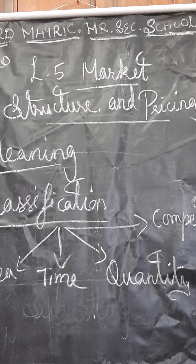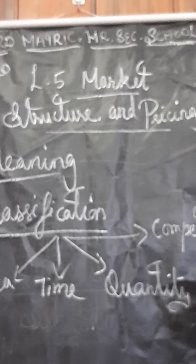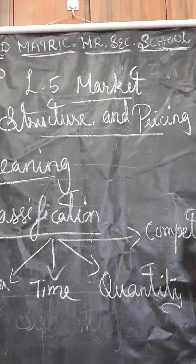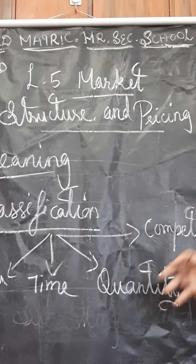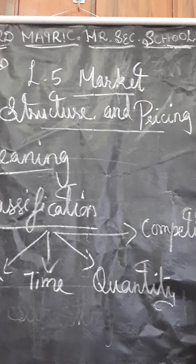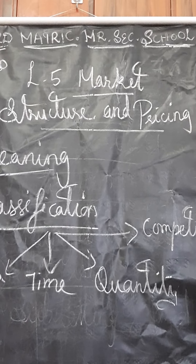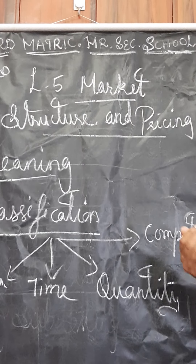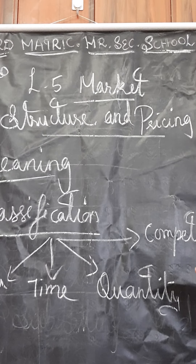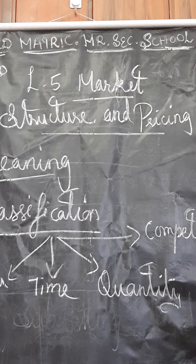Next, the price should be agreeable to both the buyer as well as the seller. What the seller is going to sell the product at — that price should be agreeable by the buyer. And also, what the buyer is going to pay, that should be agreeable to the seller. Also, in the market there may be direct exchange or indirect exchange.